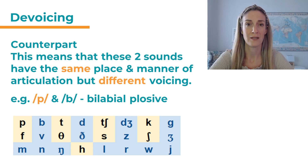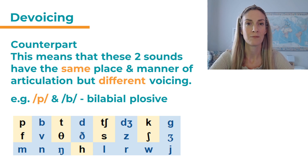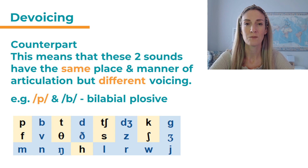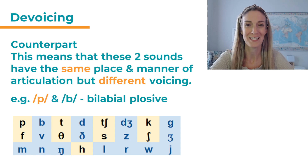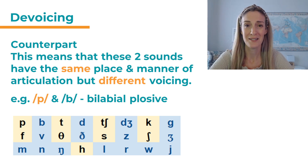For example, 'p' and 'b' — both of those are bilabial plosives. Bilabial tells us about the place of articulation and plosive about the manner. But there is a difference: it's the voicing. 'P' is unvoiced, but 'b', its counterpart, is voiced. This will be important for later on.